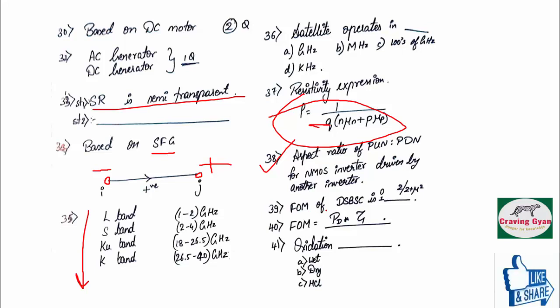Thirty-ninth question, figure of merit for DSBSC is 0, 1, 2 divided by 2 plus mu square. And one more option was 0.5. The answer is 2 divided by 2 plus mu square.